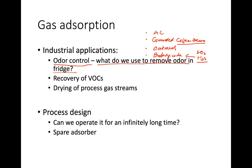Gas adsorption can also be used to recover VOCs. If the VOC in a gas stream is valuable — for example, in petroleum refining — we can use gas adsorption to capture them on activated carbon, then regenerate the carbon to release and collect the VOC. Gas adsorption can also be used to dry process gas streams by removing water vapor through adsorption onto activated carbon.